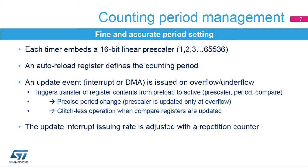This update event triggers the transfer from preload to active registers for multiple parameters, in particular the clock prescaler, auto-reload value, compare registers, and PWM mode. An 8-bit programmable repetition counter allows you to decouple the interrupt issuing rate from the counting period and have, for instance, one interrupt every single, second, third, and up to 256th PWM period. This is particularly useful when dealing with high PWM frequencies.